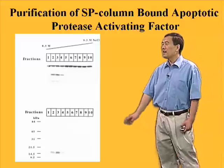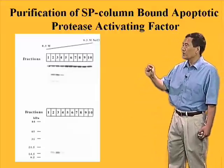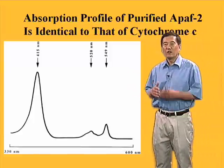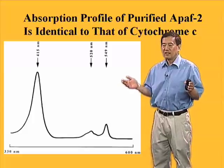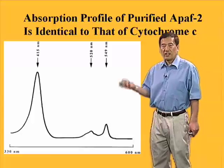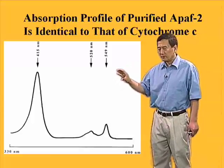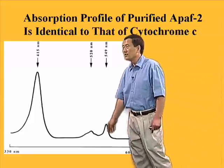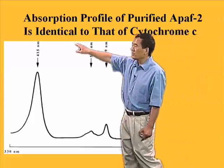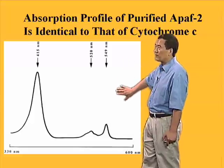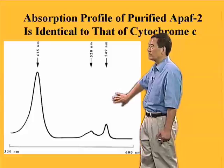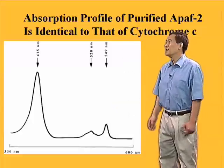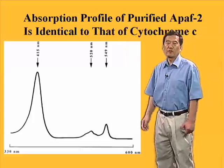At that time, we noticed that the fractions containing this protein also looked pink — quite surprising, because none of the proteins known to be involved in apoptosis were known to have a pigment. With the color, we put it in a spectrometer and obtained an absorbance profile. Here is that absorption profile — you can see three distinct absorption peaks. After comparing this profile to the textbook, we realized very quickly that the protein we purified is actually cytochrome C.